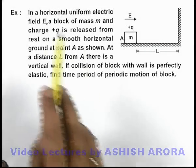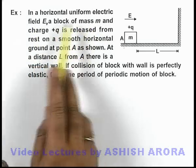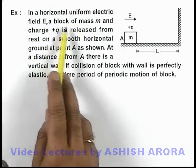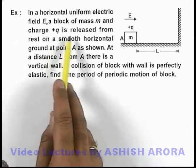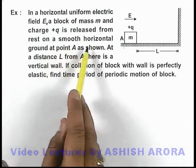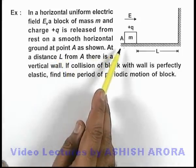In this example, we are given that in a horizontal uniform electric field E, a block of mass m and charge +q is released from rest on a smooth horizontal ground at point A, as shown in the figure.